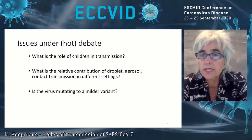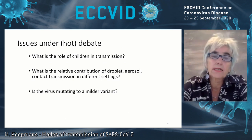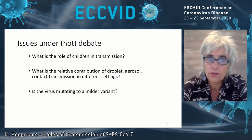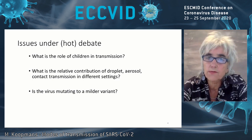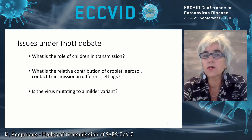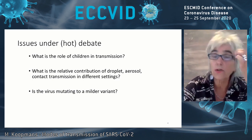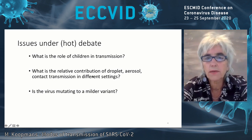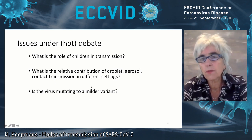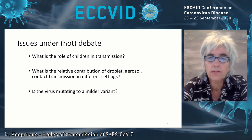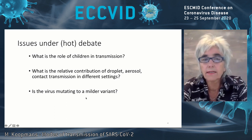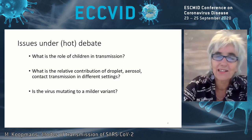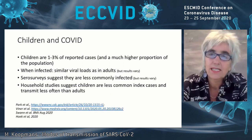This is also an area that I'm sure all of you have gotten numerous questions about. There are three topics I would like to discuss: what is the role of children in transmission — what do we know, what do we not know? What is this discussion about the relative contribution of droplets versus aerosols in different settings? And is the virus mutating to a milder variant — where do we stand with this?